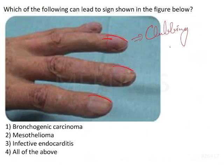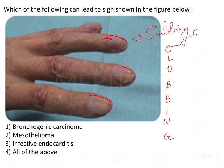We already have a mnemonic for this, which we have discussed previously. The various important causes of clubbing can be remembered using the mnemonic 'CLUBBING.' C stands for cystic fibrosis and cyanotic heart disease.